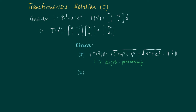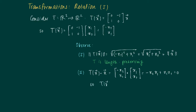Secondly, we take an inner product — the dot product of Tx with the original vector x. So it's the dot product of (-x₂, x₁) with (x₁, x₂), which equals -x₂·x₁ + x₁·x₂ = 0. This holds for any vector x, so we have that T(x) is perpendicular to x.